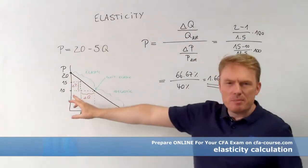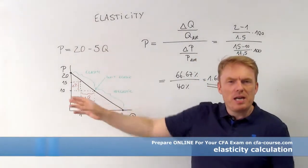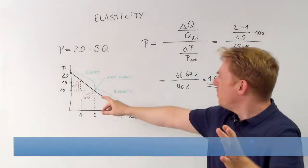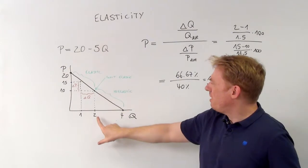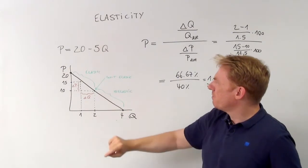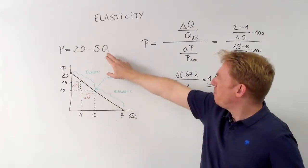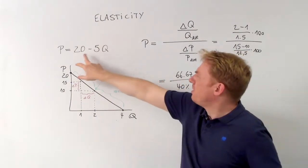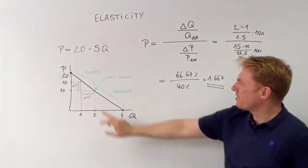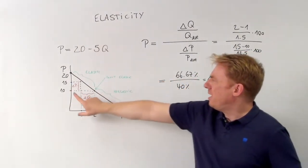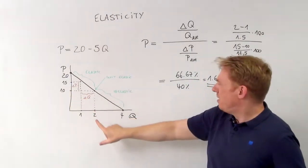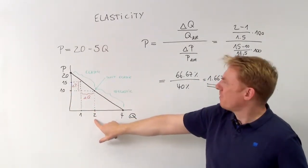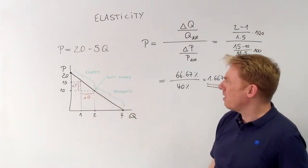For example, if we have a price of 10 — 10 euros or 10 dollars — we have a quantity demanded of 2. Because if you put 2 into the quantity: 20 minus 5 times q equals 10. So a price of 10 leads to a quantity demanded of 2, and so forth and so on.